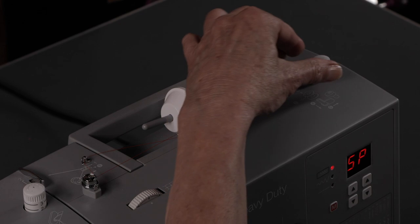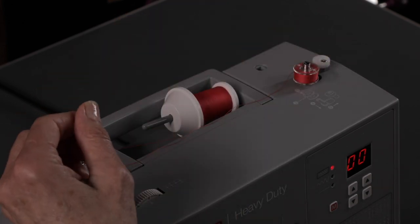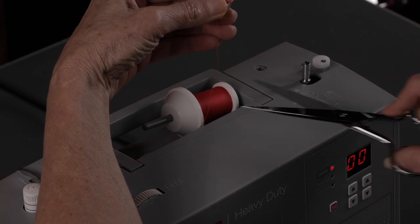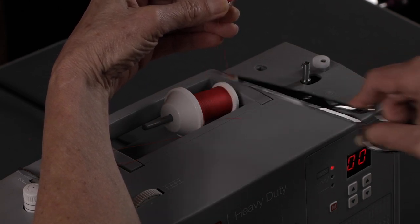When it stops winding, push it to the left, lift it off the bobbin winding spindle, and cut the thread.